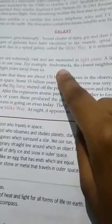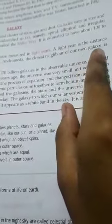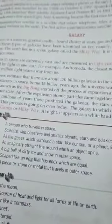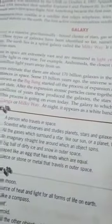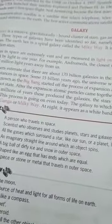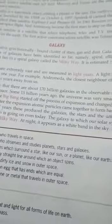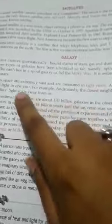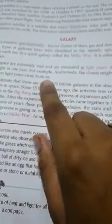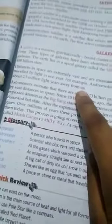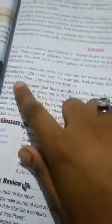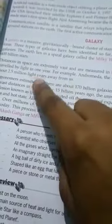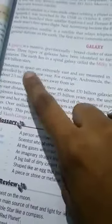For example, Andromeda, the closest neighbor of our own galaxy, is about 2.5 million light years away from us. Light year is the unit here.